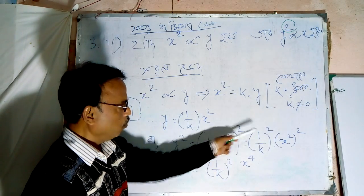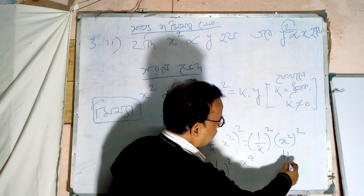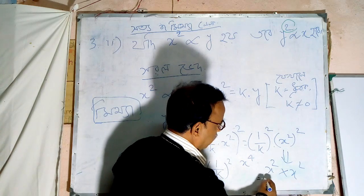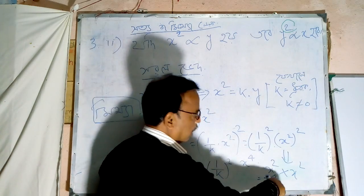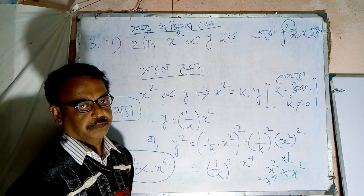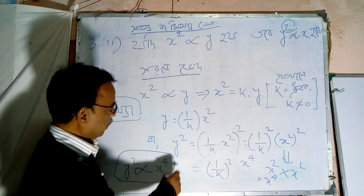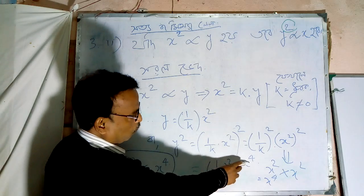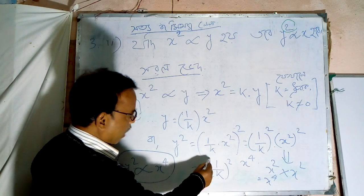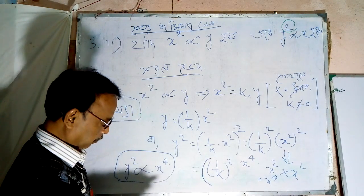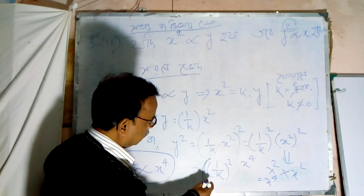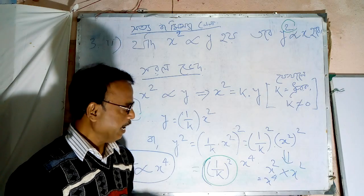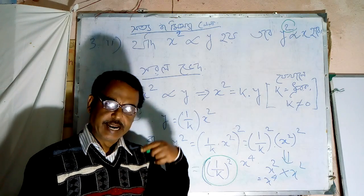x squared whole squared, x squared into x squared, x to the power 4.